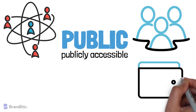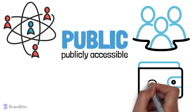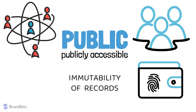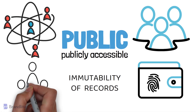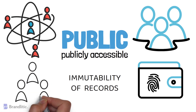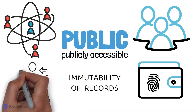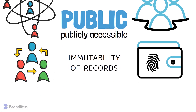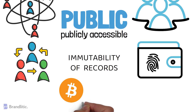Hence it ensures that the data is secure and helps in immutability of the records. Also, all the nodes connected to this public blockchain will have equal authority and hence this public blockchain becomes fully distributed. Bitcoin and Ethereum are some of the examples of public blockchain being used in real-world scenarios.